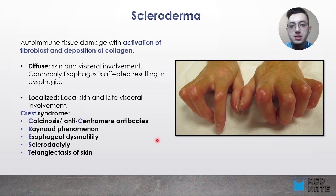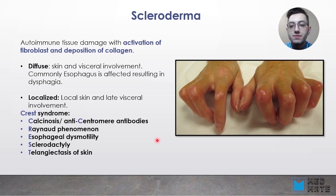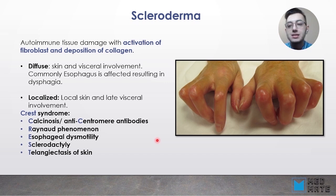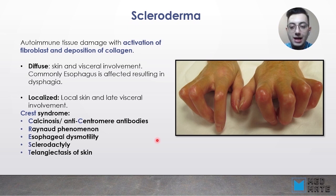In localized scleroderma, there is local skin involvement and late visceral involvement. In this type, we develop CREST syndrome, where each letter stands for one presentation of the disease: Calcinosis, anti-centromere antibodies, Raynaud's phenomenon, Esophageal dysmotility, and Sclerodactyly.